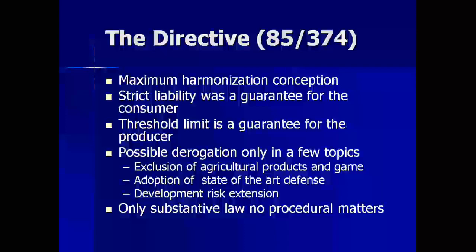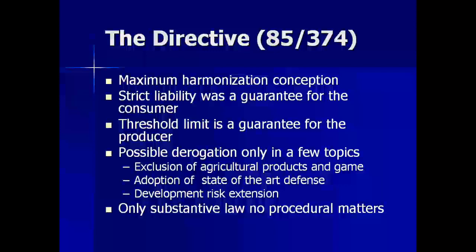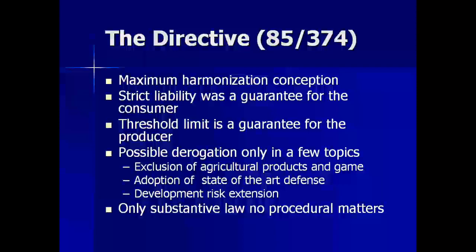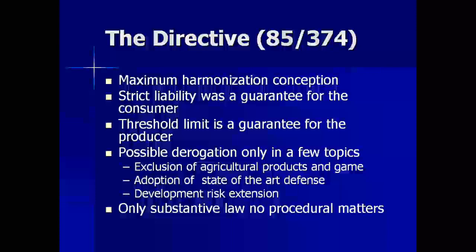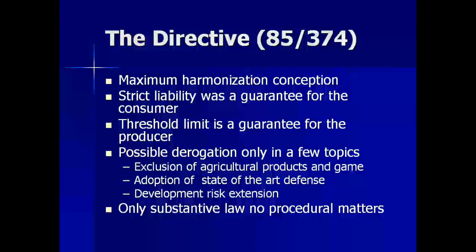The directive introduced maximal harmonization in Europe. While establishing strict liability, it also pointed out the thresholds of this liability. Only some topics and provisions of the directive are subject to derogation. When the directive entered into force, it originally led member states to introduce exclusions of agricultural products and games — foods not being processed. The directive originally had a presumption that consumers are well informed on risks associated with the consumption of preserved or hormone-enriched foods. But later, when big food scandals like the mad cow disease happened in Europe, the directive was modified in 1999 and the strict liability system was extended to these products as well.